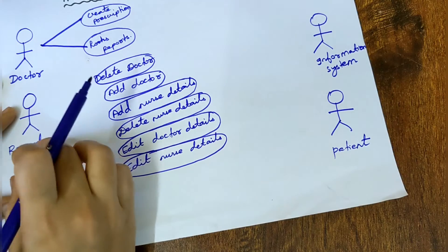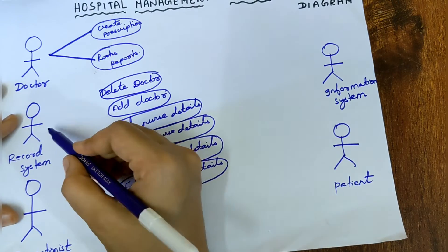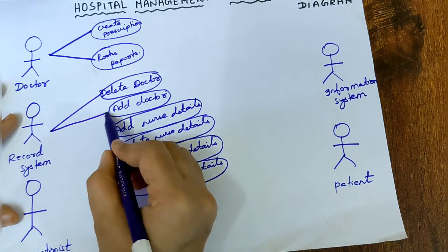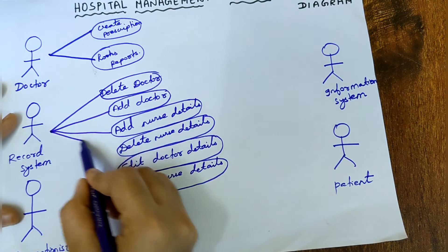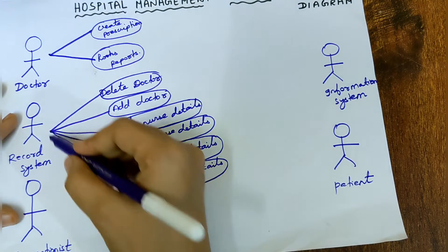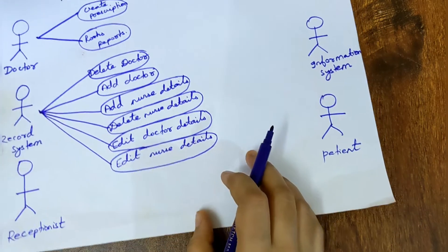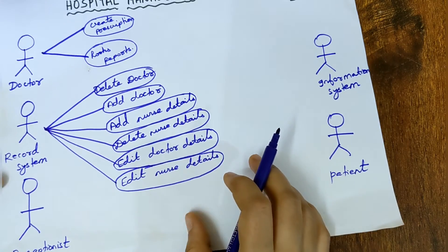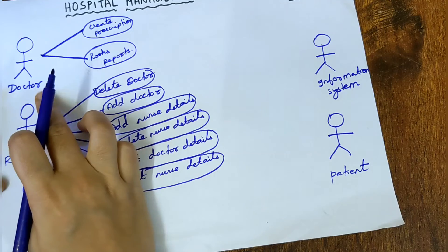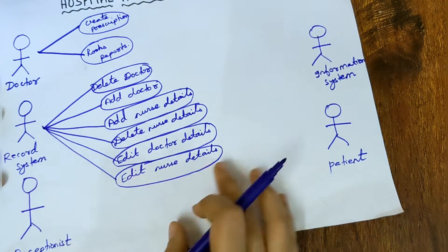Now we have to join the record system actor and its use cases by drawing connectors, which are lines. So we have now finished drawing the use cases for doctor and for record system.